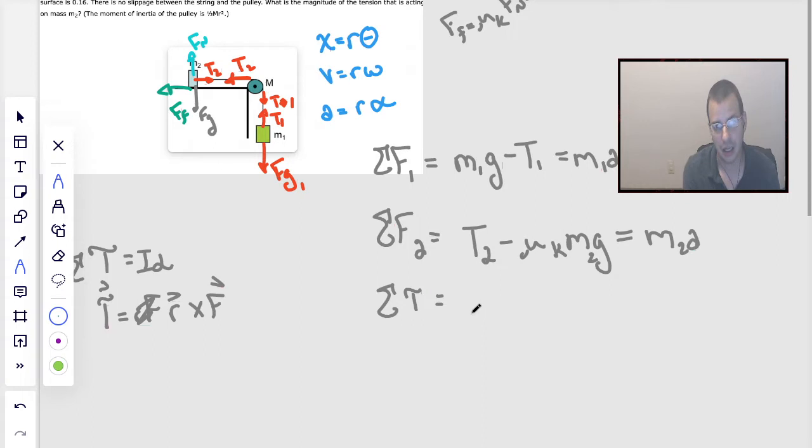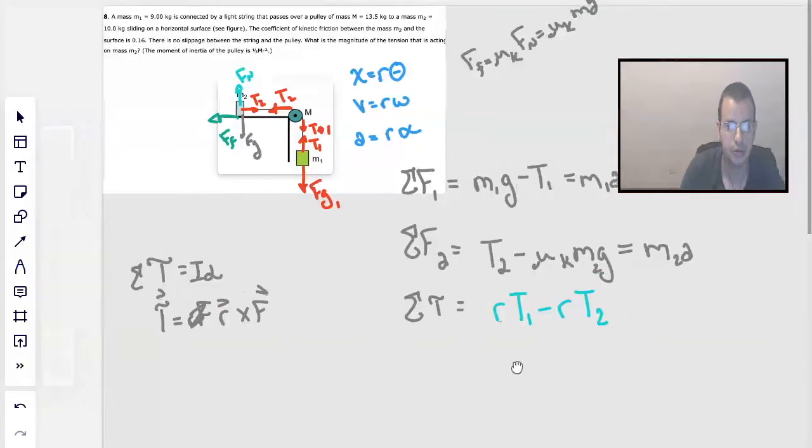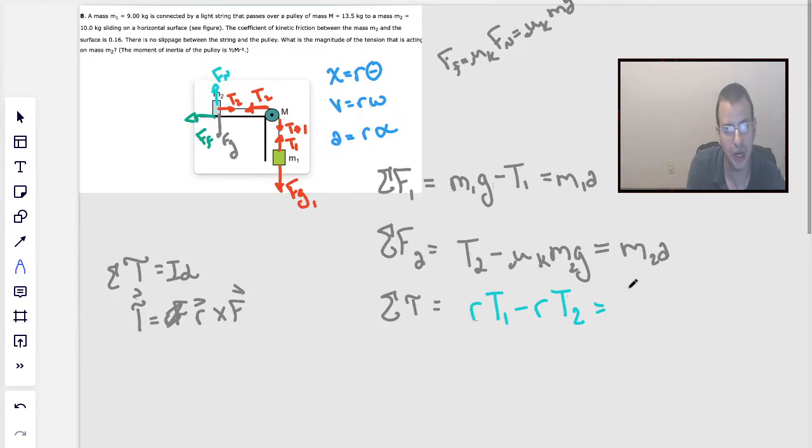This is torque 1, which is rotating it downward, R tension 1 minus R tension 2. That's going to equal moment of inertia, which is one half MR squared. I'm going to call this M_P for pulley. I know they just use big M, I just don't want to. I'm going to call this M pulley. Ignore that random blue dot, times R squared.